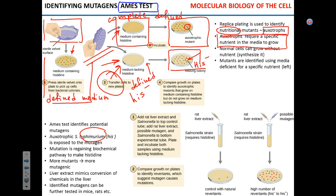Mutants that can't make something — mutants that require a certain type of nutrition — are called nutritional mutants, or auxotrophs. Auxotrophs require a specific nutrient to grow. Technically speaking, humans are auxotrophs — we need about 10 amino acids, vitamins, and so on. So we have identified the auxotrophic mutants. Normally, Salmonella can live without exogenous histidine — it can make histidine on its own.